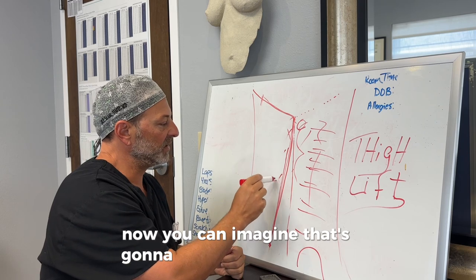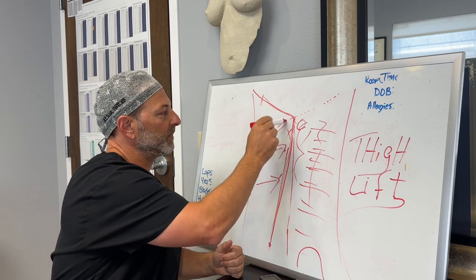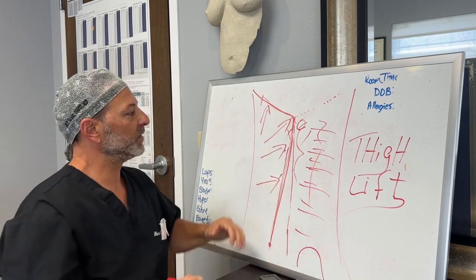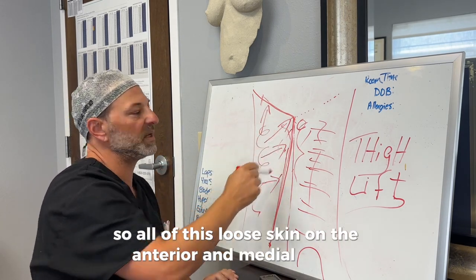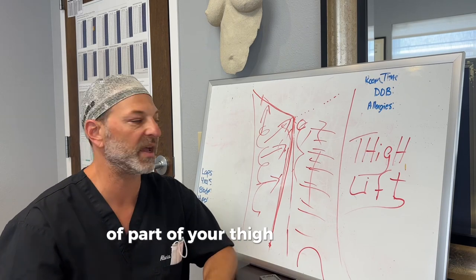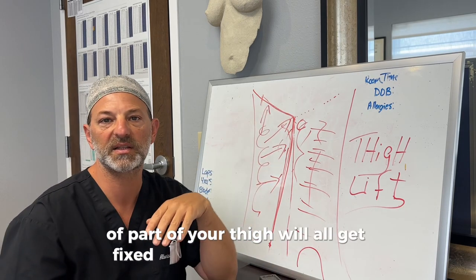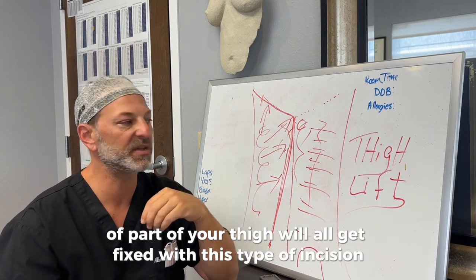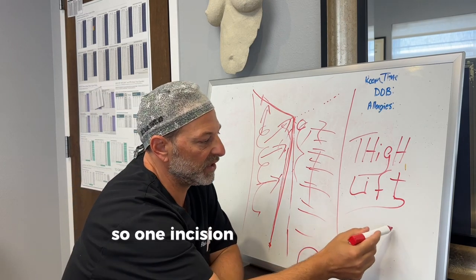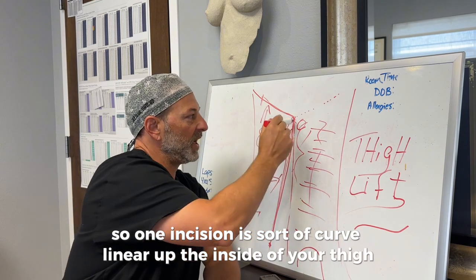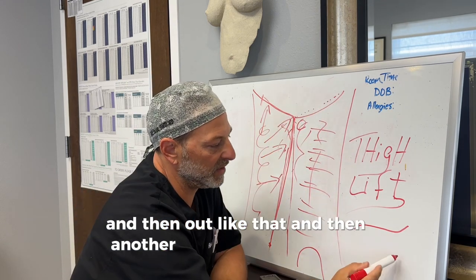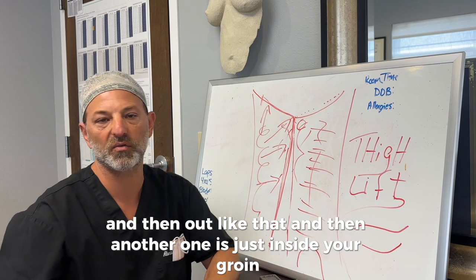Now you can imagine, that's going to pull the skin this way. So all of this loose skin on the anterior and medial part of your thigh will all get fixed with this type of incision. So one incision is sort of curvilinear, up the inside of your thigh, and then out like that, and then another one is just inside your groin.